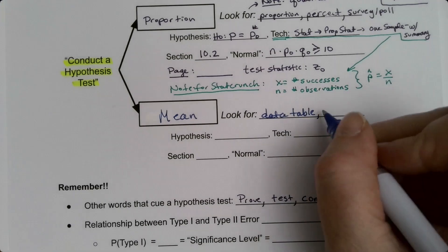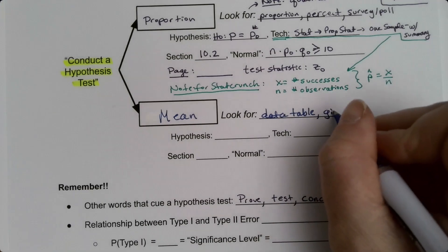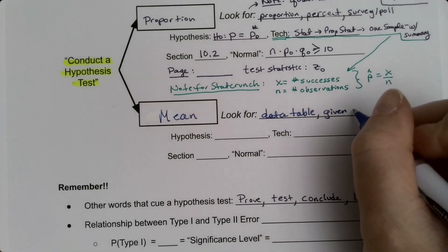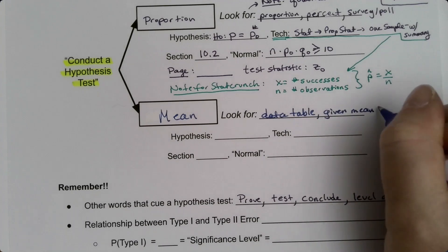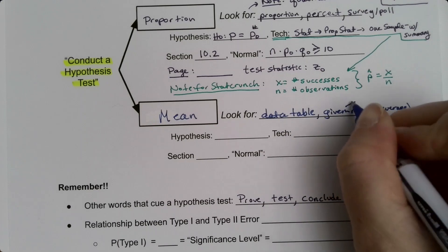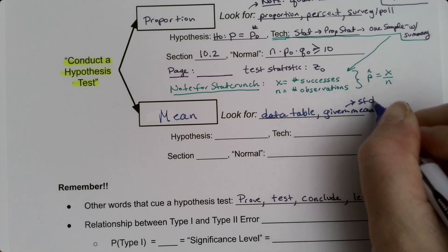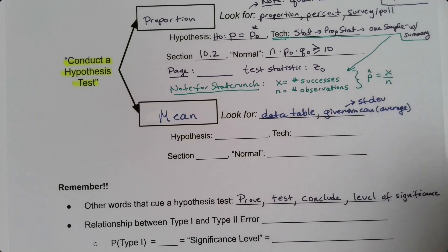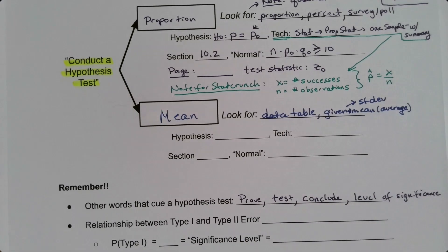Sometimes you won't though. Sometimes you'll actually be given the mean or the average and, more importantly, given the standard deviation. If you're given the mean, average, and/or the standard deviation, that's a sign that this is the mean problem.